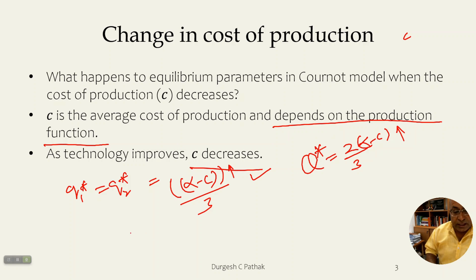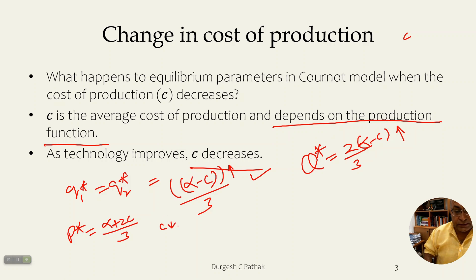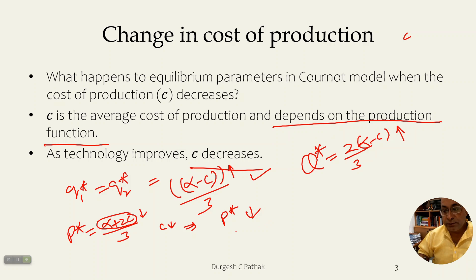Now what will happen to the equilibrium price? Our P* was given as (alpha plus 2C) divided by 3. Since C is decreasing, this entire expression decreases, so the equilibrium price is going to decrease.